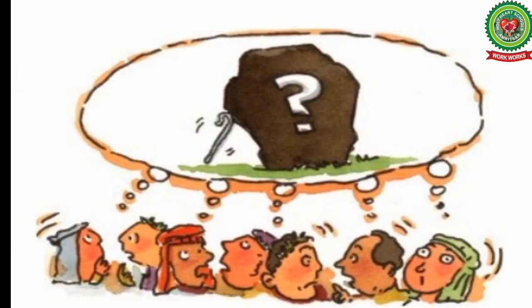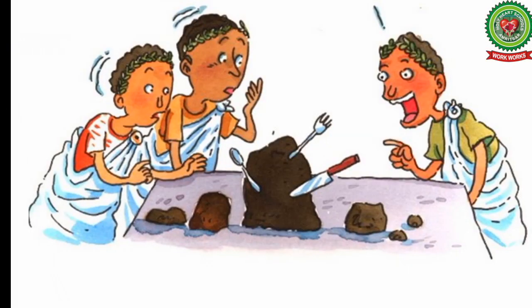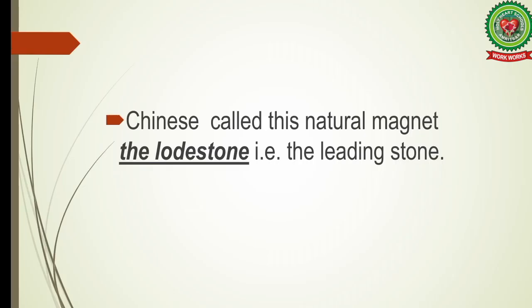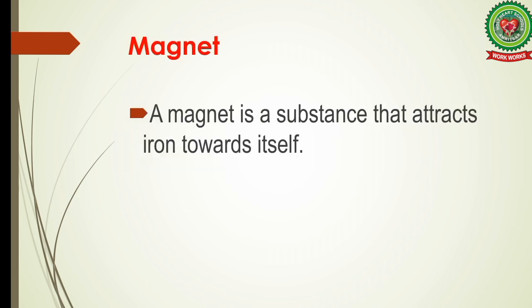The news spread across the country about the strange rock that had the power to pull things to it. The Greeks later found other similar black rocks with this power. These rocks were named magnets after either Magnesia or Magnus himself. Nowadays such rocks are also called magnetite. The Chinese called this natural magnet the lodestone — meaning 'the leading stone' — because it can be used to find directions.